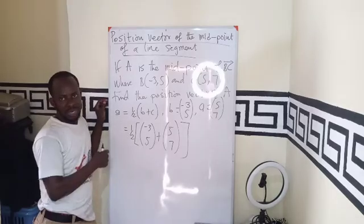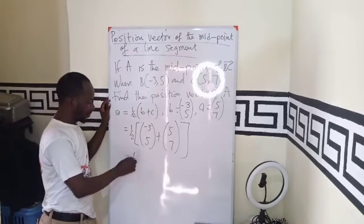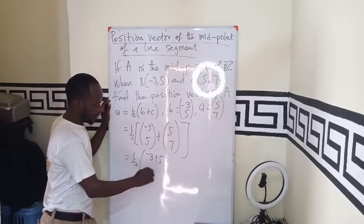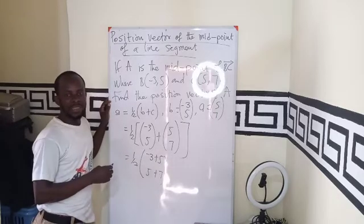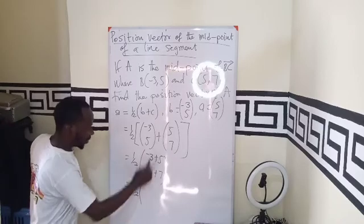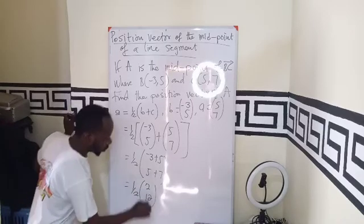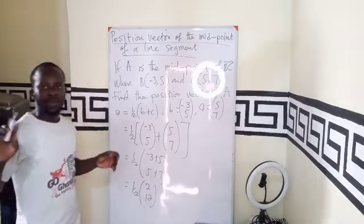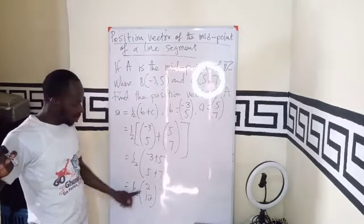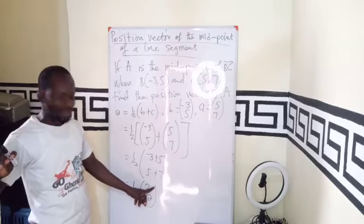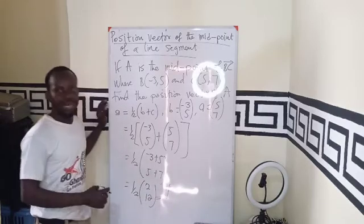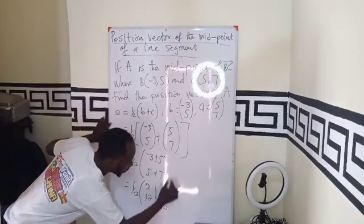Then we perform the operation in the bracket, still maintaining our half as a coefficient out here. -3 plus 5, then 5 plus 7. I think we can continue to have half (2, 12). So under multiplication of vectors, we use a scalar. When the scalar is multiplying the vector, it multiplies both the component on the x-axis and the component on the y-axis. So half times 2 will give us 1. Half times 12 will also give us 6.